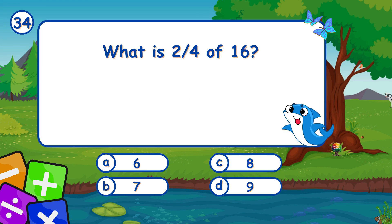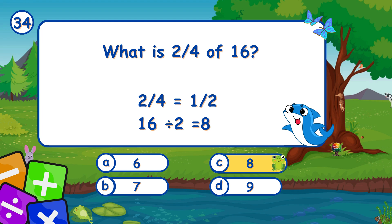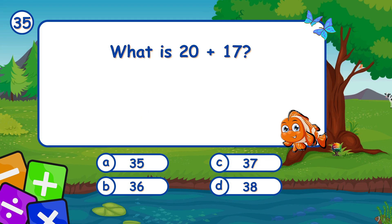What is two-fourths of 16? It's C, 8. Two-fourths of 16 is 8. What is 20 plus 17? It's C, 37. Adding 20 and 17 gives 37.